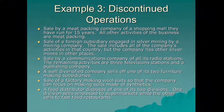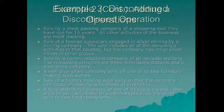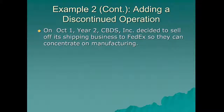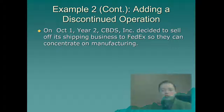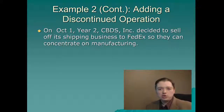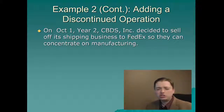Going back to the CBDS example: they've been running a shipping business and are going to sell that off to FedEx so they can concentrate on manufacturing. This is probably a discontinued operation, because it would not be a good fit to take shipping equipment — delivery trucks or planes — and try to use them in a production facility. So this qualifies as a discontinued operation, and we'll come back in the next segment to talk about how you actually record this on the income statement.